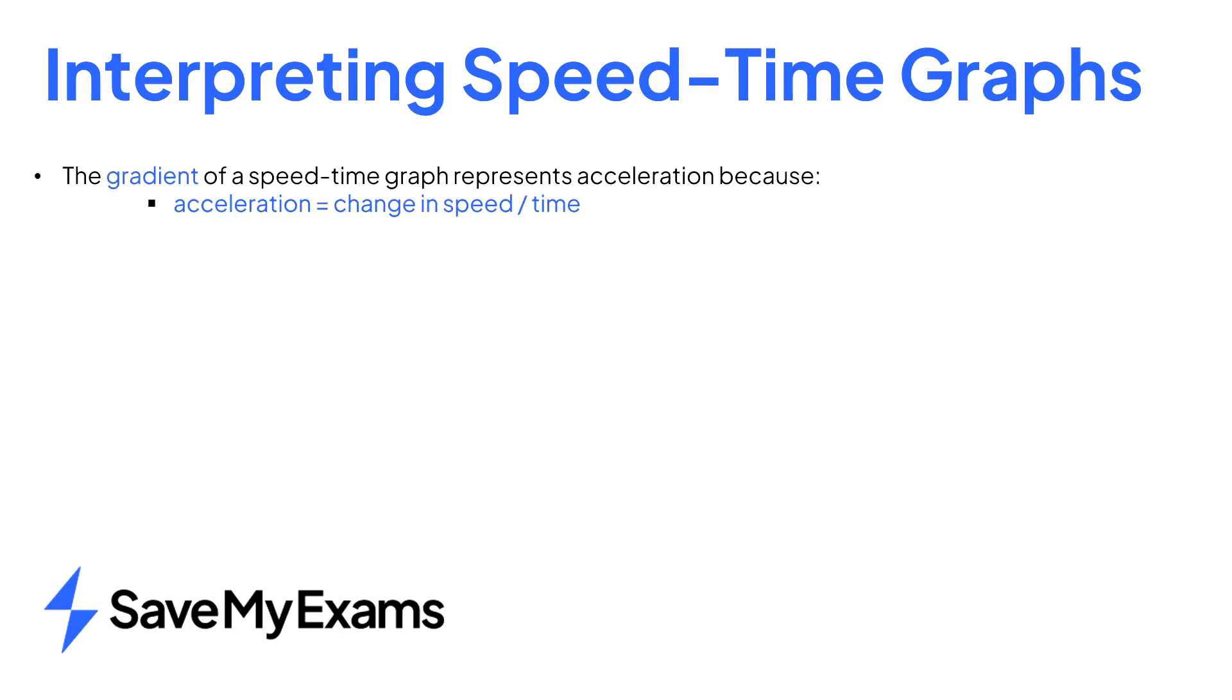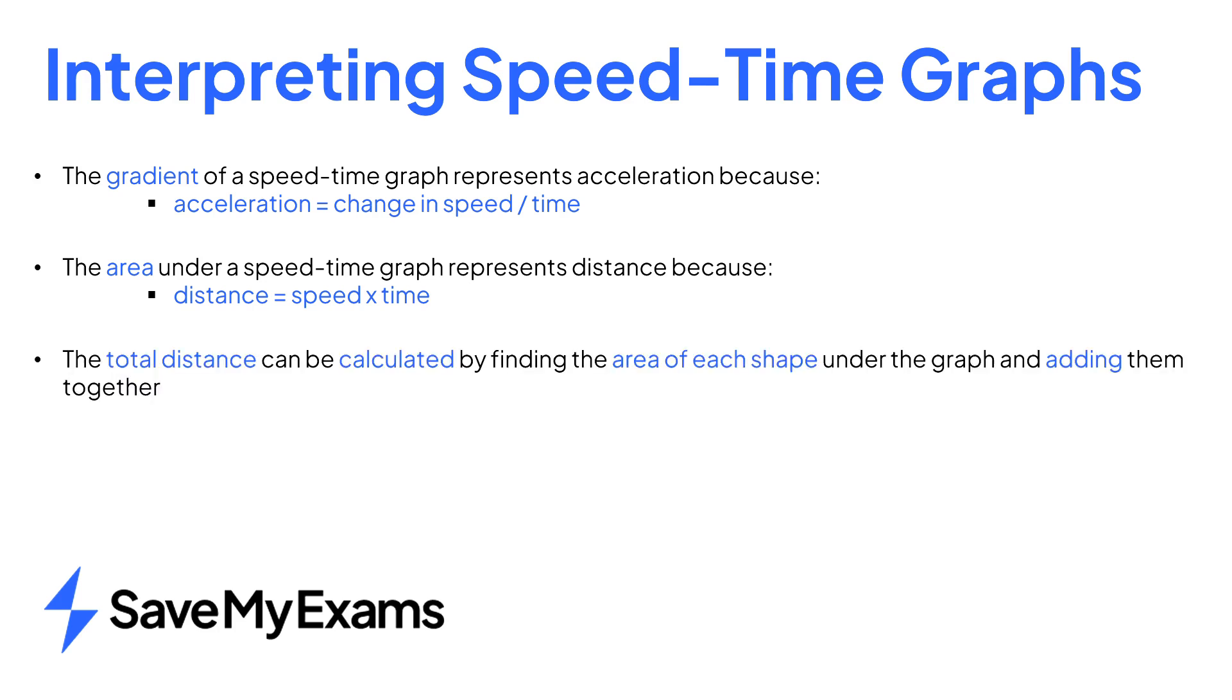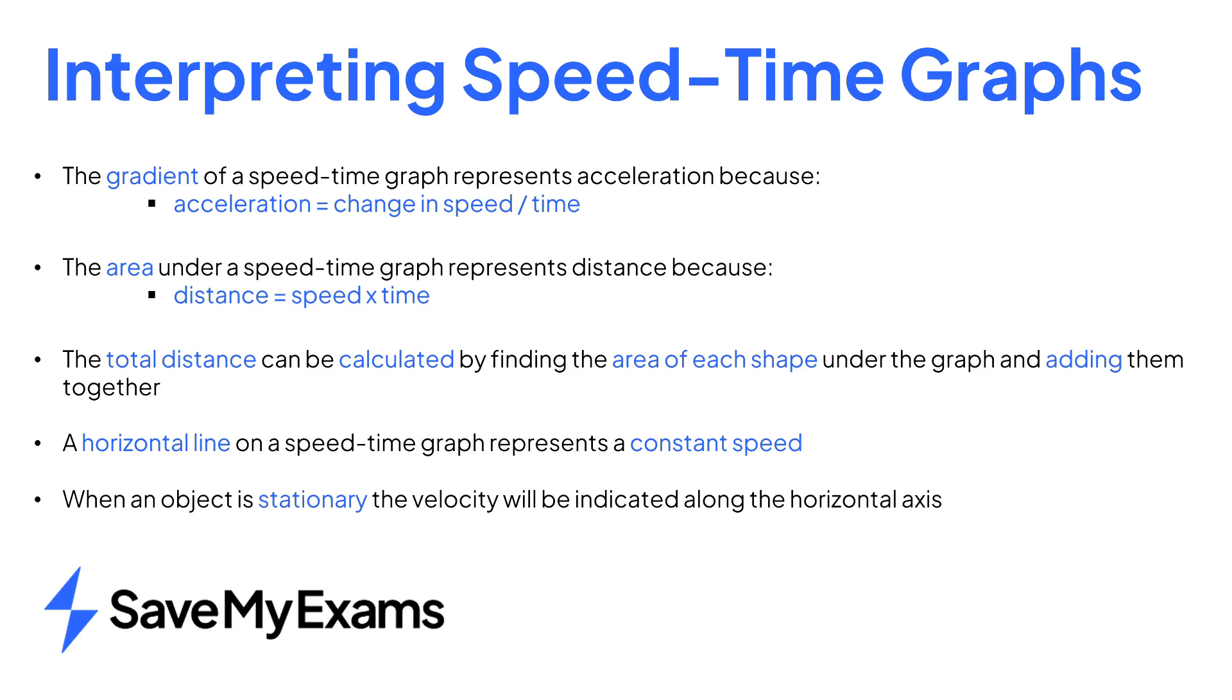In summary, the gradient of a speed-time or velocity-time graph represents acceleration because acceleration equals the change in speed divided by time. The area under a speed or velocity-time graph represents distance because distance is equal to speed times time. This is equal to the vertical axis times the horizontal axis. The total distance of a journey can be calculated by finding the area of each shape or section of the graph and adding them together. Constant speed is represented by a horizontal line on a speed or velocity-time graph. A stationary object has a velocity of zero on a speed-time graph.